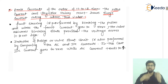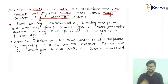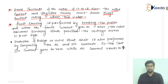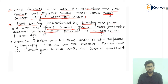As a fault has occurred, fault clearing is performed by blocking pulses. When the fault current goes to zero, the valve assumes the blocking state, provided the voltage across it is not high.